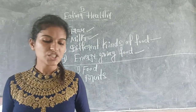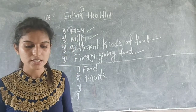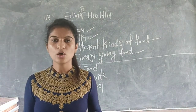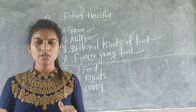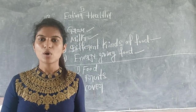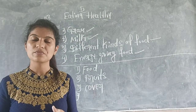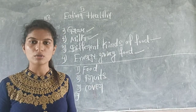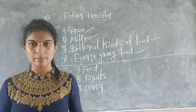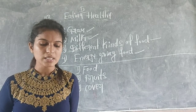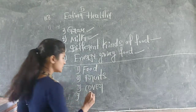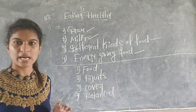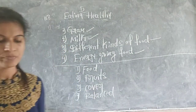The third fill-in-the-blank: blank all food with a lid or net — the answer is cover. We should cover all food with a lid or net because insects can sit on the food and spoil it. The fourth: we must eat a blank diet — the answer is balanced diet.